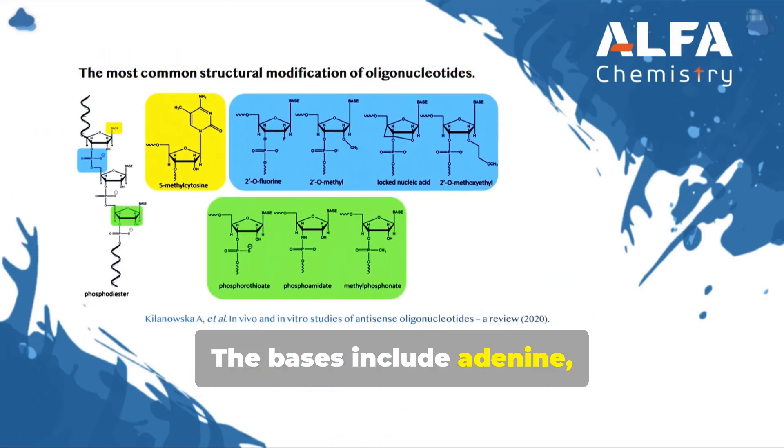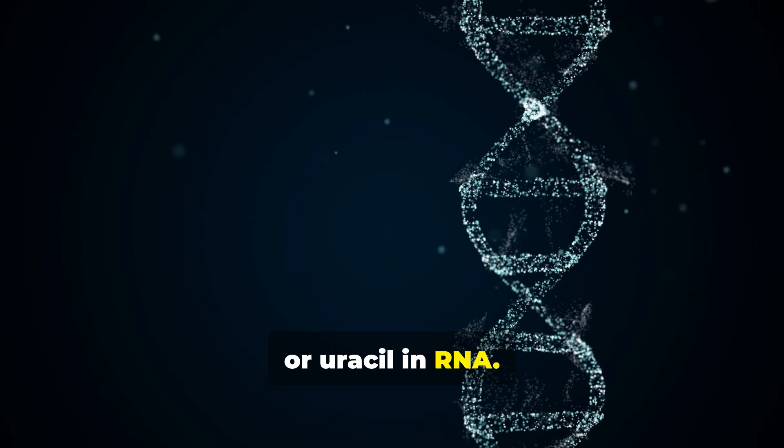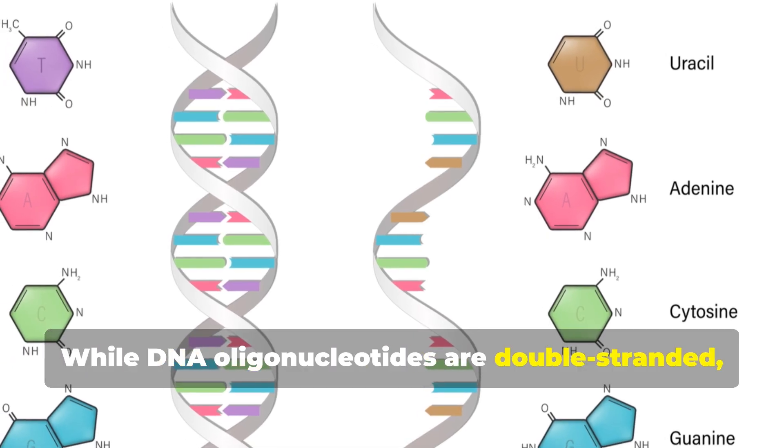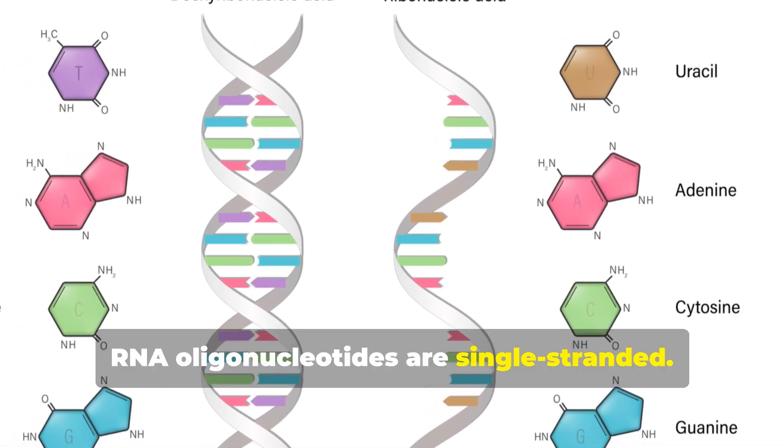The bases include adenine, cytosine, guanine, thymine in DNA or uracil in RNA. While DNA oligonucleotides are double-stranded, RNA oligonucleotides are single-stranded.